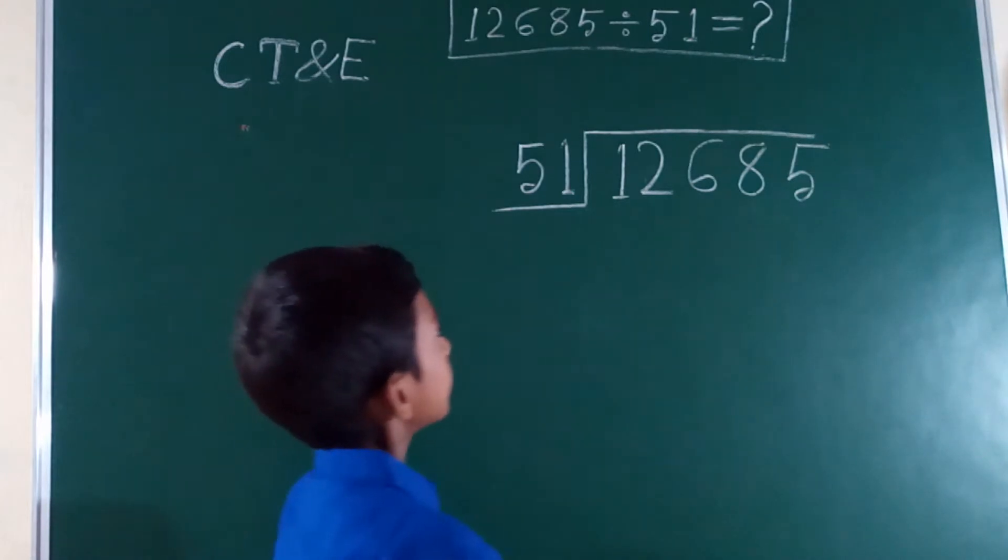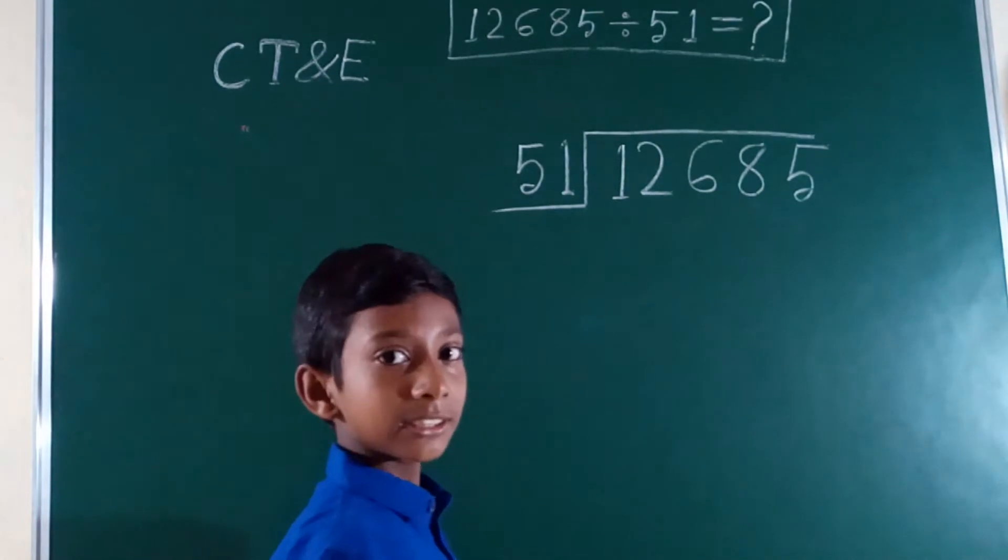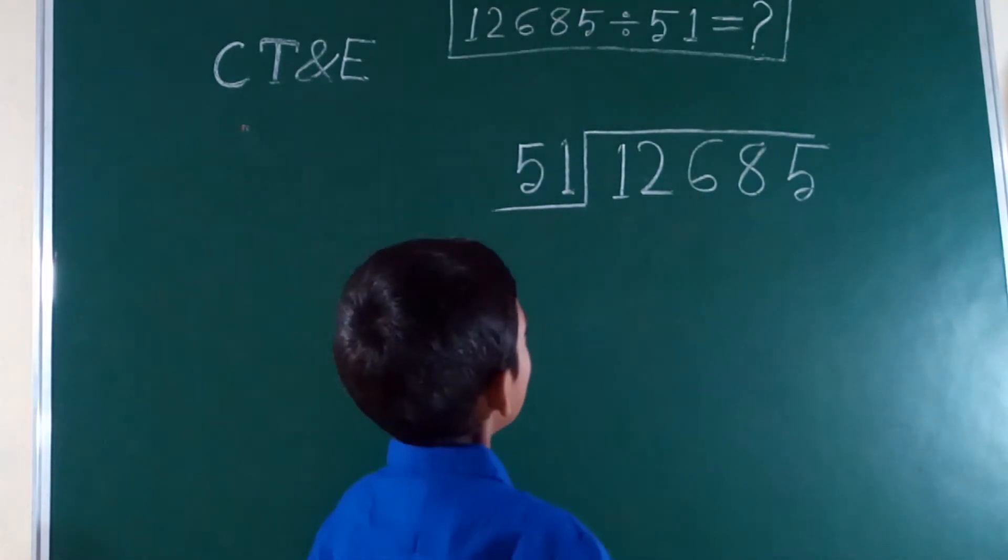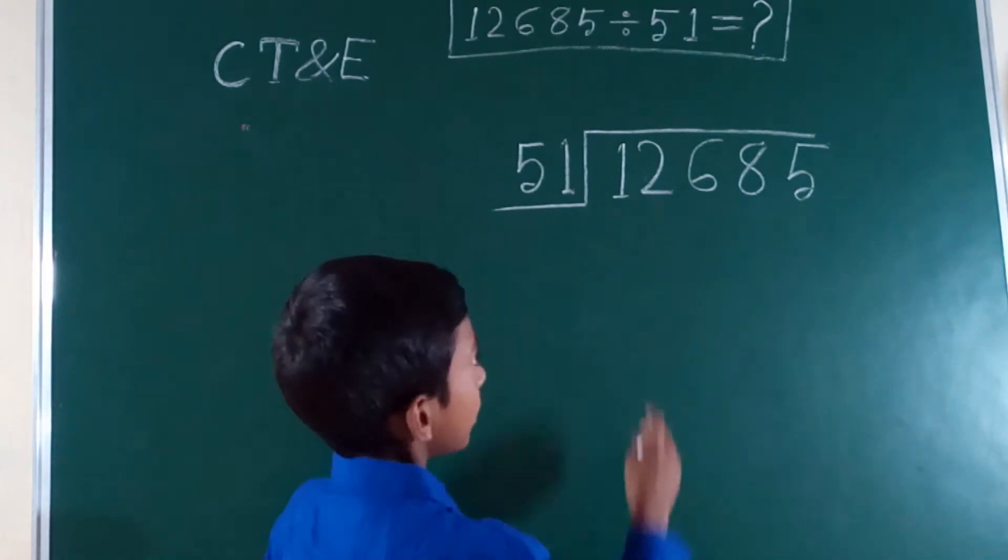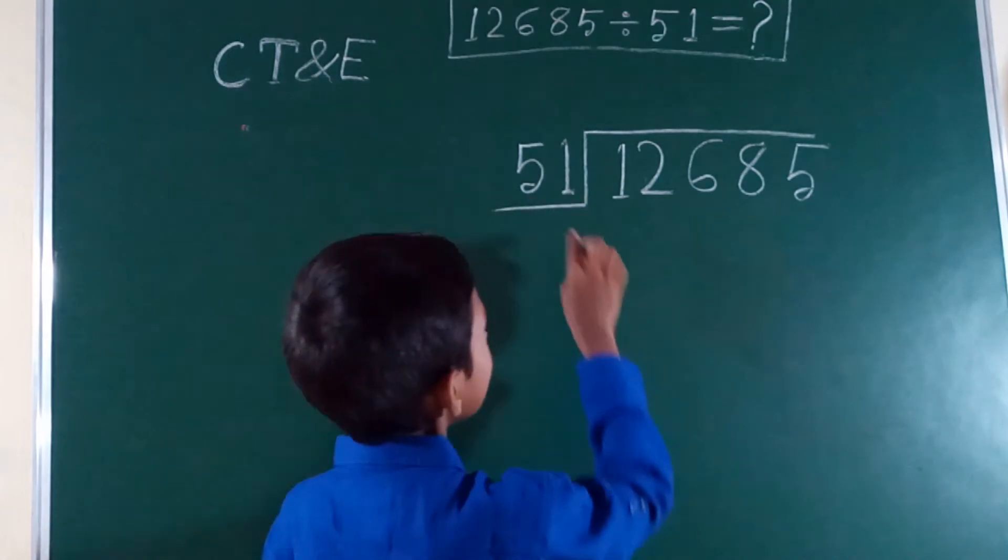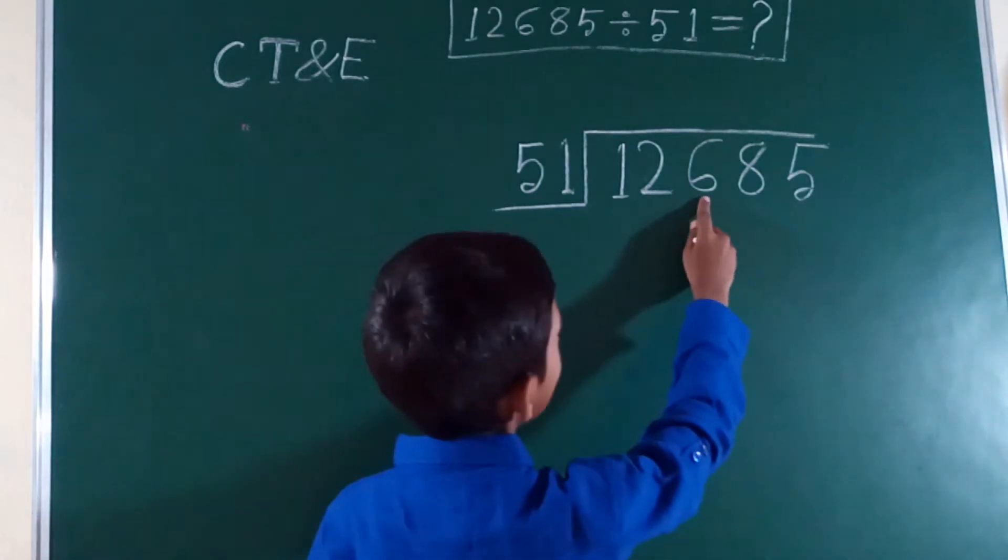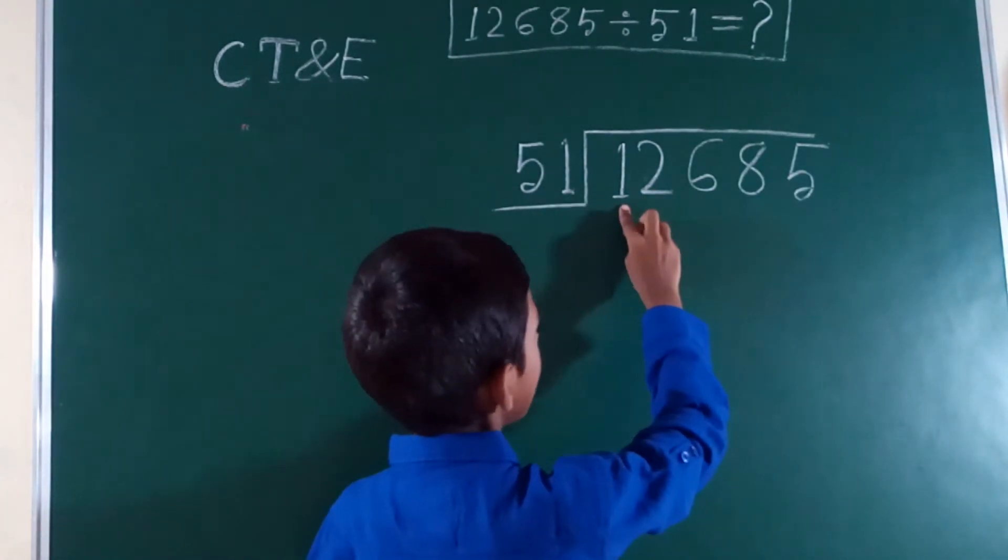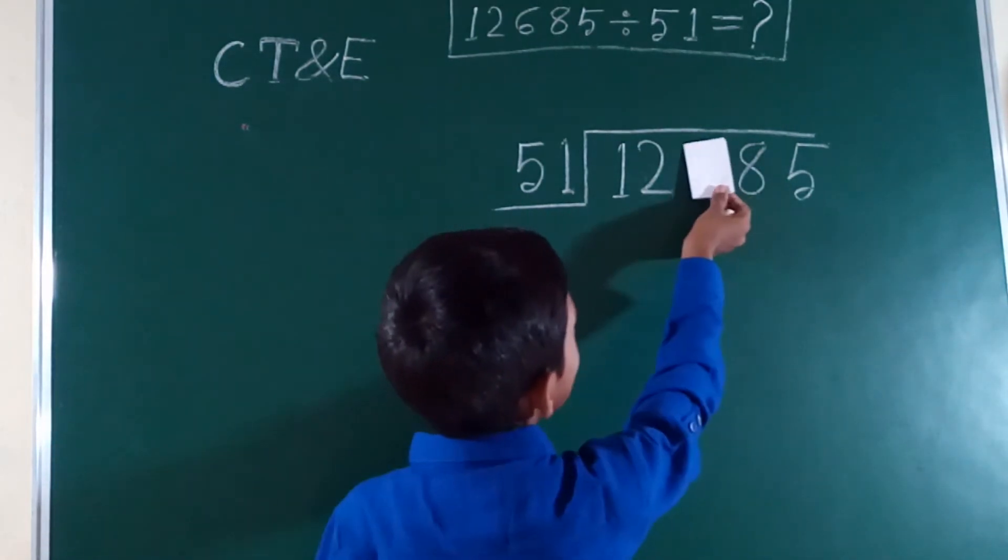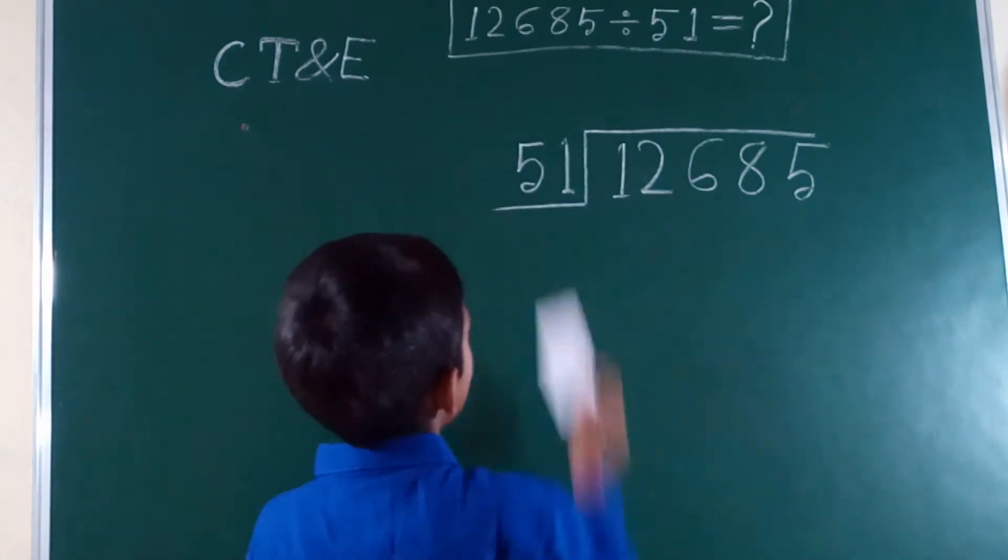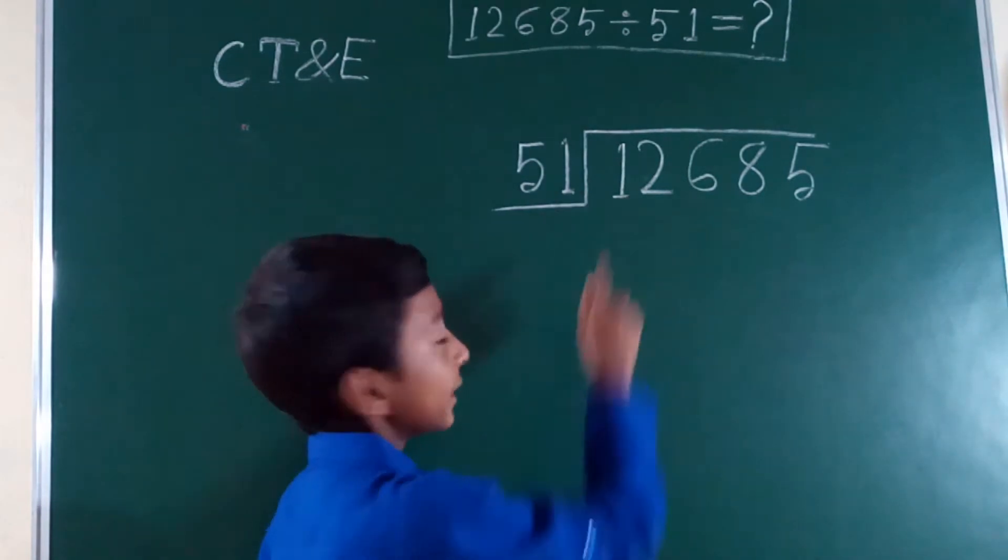First, 51 is a big number, so we cannot count that table easily. We have to take three numbers because 12 is smaller than 51, so it is not possible to divide. We take three-digit numbers, so it becomes 126. Now we have to imagine that the 6 and 1 are not there. We count the 5 table so that 12 does not cross.